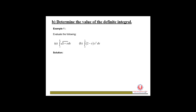Let's try the first example: the integration from 3 to 8 of √(1+x) dx. First, we have to change this square root form into index form, so we write 1+x to the power of one-half dx. Next, we integrate: 1+x to the power of one-half becomes 1+x to the power of 3 over 2.